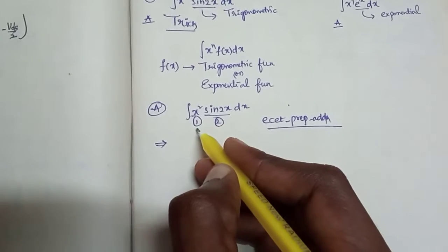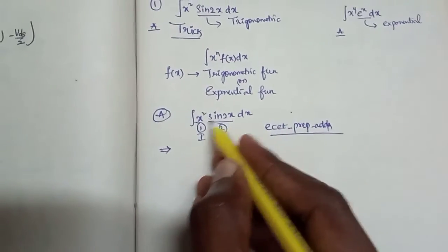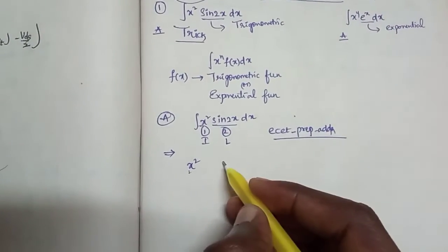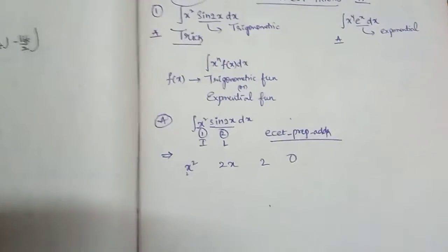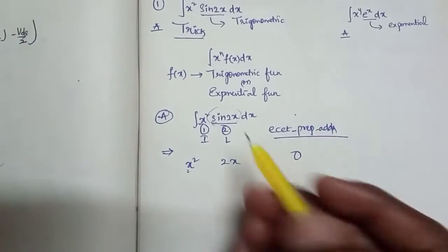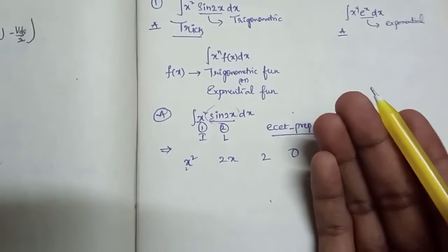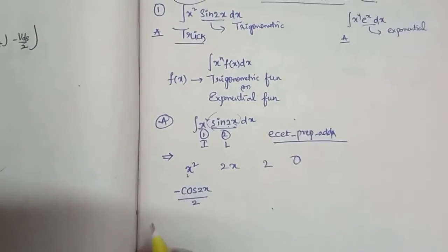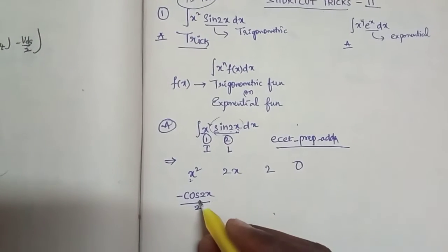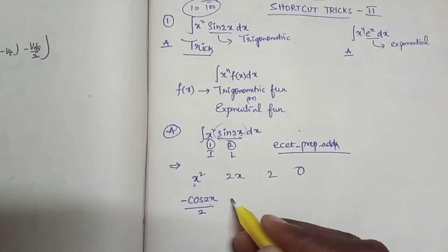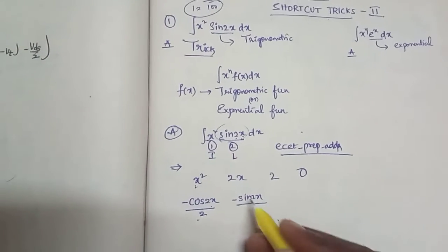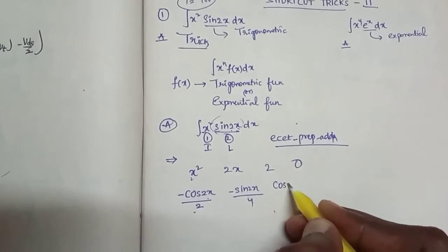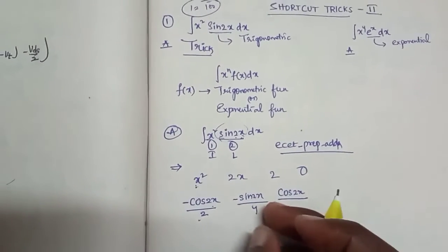First of all, use the ILATE rule. You can use this method. First, take x² and differentiate: x² gives 2x, then 2. On the other side, switch sin(2x): integrating sin(2x) gives minus cos(2x) divided by 2, and integrating again gives minus sin(2x) divided by 4.